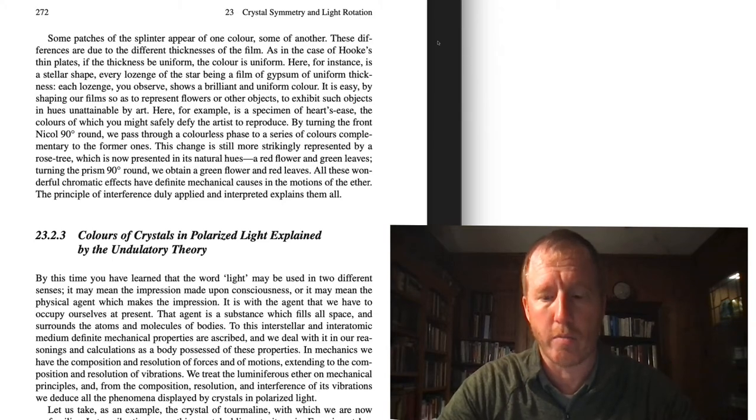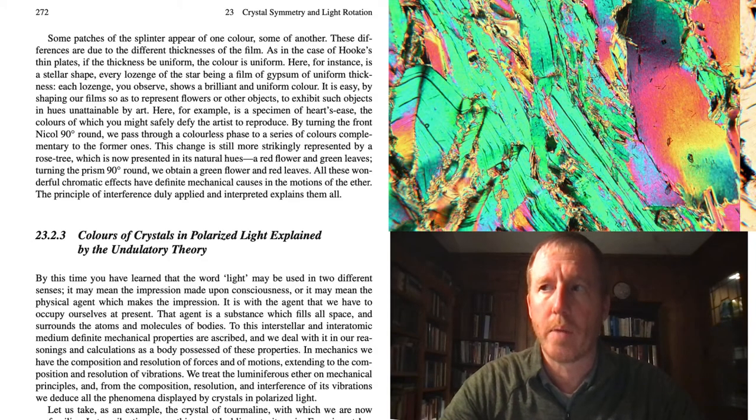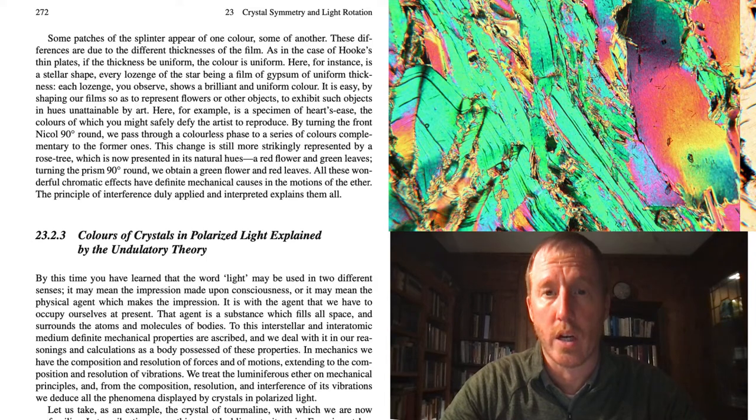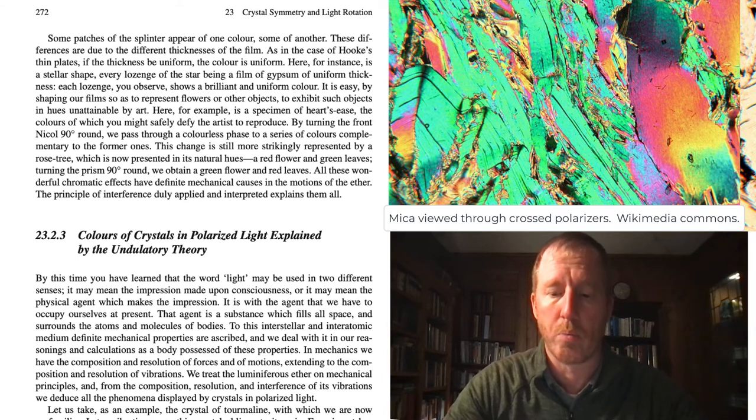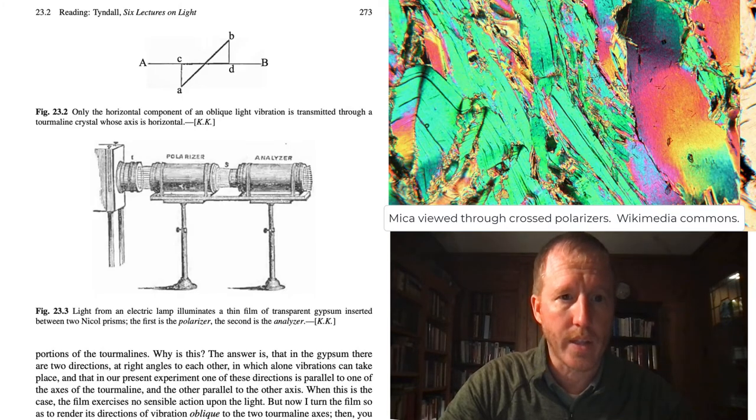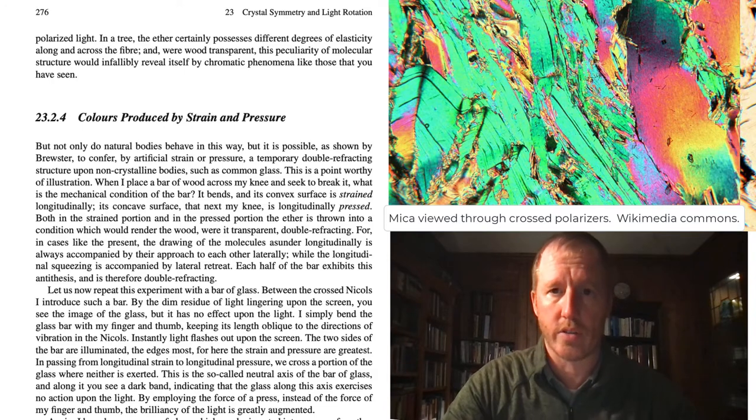And if you use a very thin layer of birefringent material, like a thin sheet of mica or a thin sheet of cellophane tape, then you can make it so that it rotates a particular color by the correct amount to make it through the second polarizer so that it will appear colored. So that's where he gets beautiful colors of thin sheets of mica or thin sheets of cellophane tape. That brought us about up to page 276.